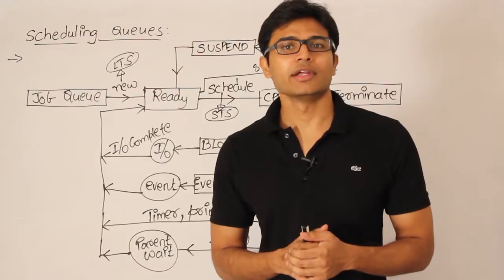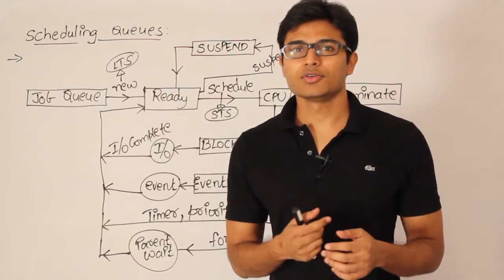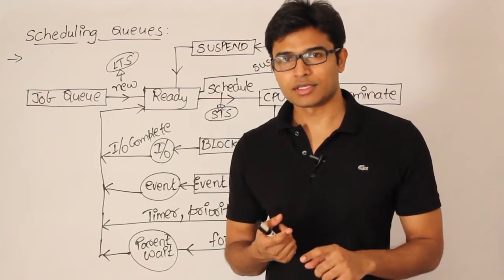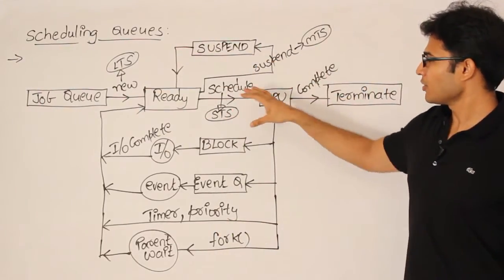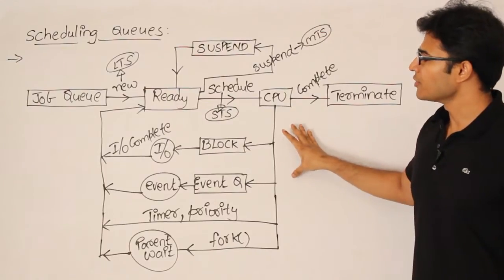So you could refer to data structures where I will teach you how to implement a queue using a linked list. And all these are queues. So whatever rectangular boxes are represented here, they are all going to be queues.